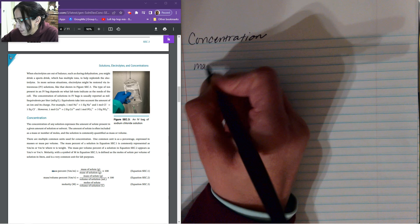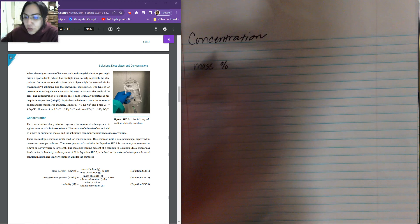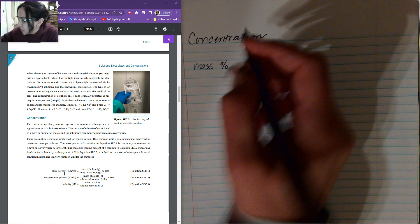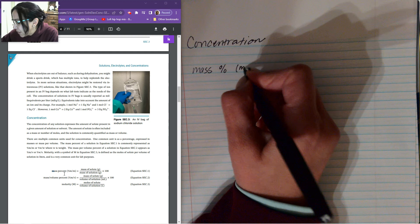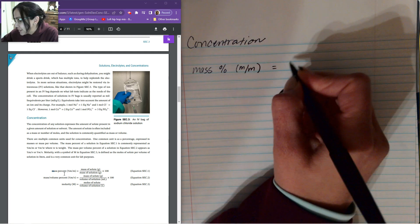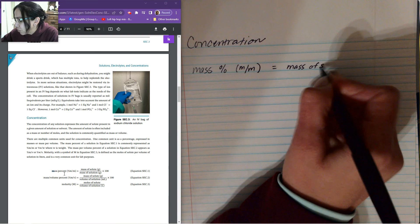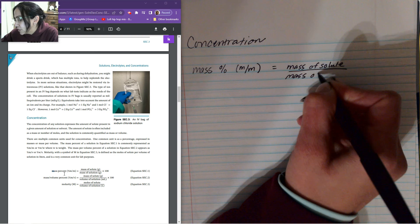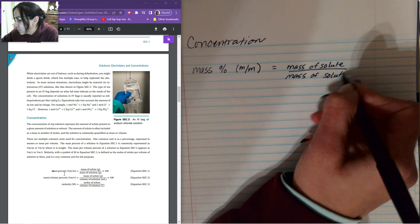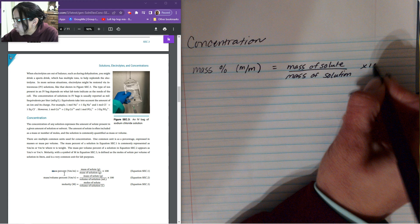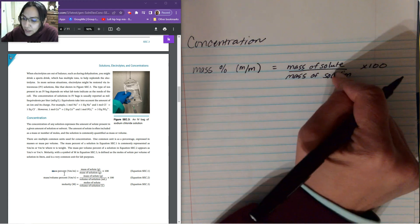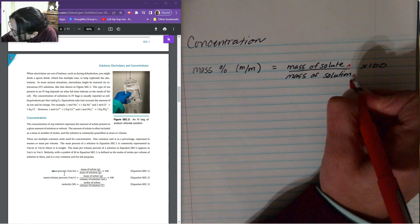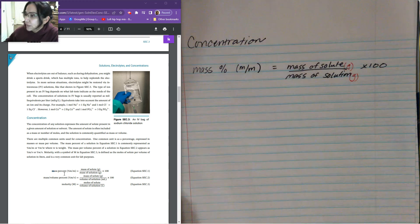So we have mass percent. And this one, you notice the first one that they give us is m to m. That means mass over mass. So mass percent of mass per mass is going to equal to the mass of the solute. So the part over the whole, over the mass of solution. And then you're going to multiply it by 100. So the mass of solute over the mass of solution and the units that they're using here, note that they're using grams on both of the units.